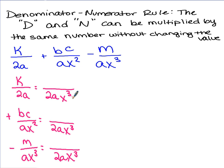Now we've got to find a new numerator. Keep in mind, just like in our numerator rule, d and n can be multiplied by the same number without changing the value. The denominator and numerator can also be multiplied by the same variable value without changing the value. So what do we multiply by 2a to give me 2ax cubed?